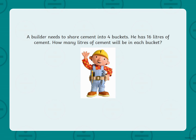I know that the builder needs to share into four groups or four buckets, and he has 16 litres of cement. So I know that my next sum will be 16 divided by four. Just showing you how it is set out: I've got my 16 under the bracket — that's the number that I'm sharing. On the outside, I've got the number being shared into, which is four. I've put a little array there with four rows going down. If I shared 16 out evenly across four rows, I would have four in each row, and there we have our answer: four. So each bucket will have four litres.